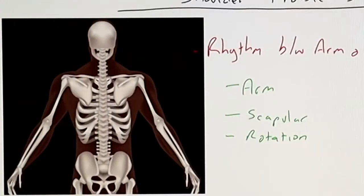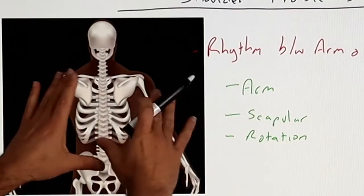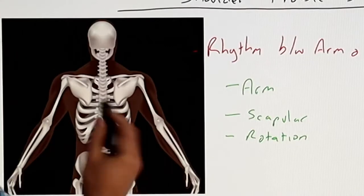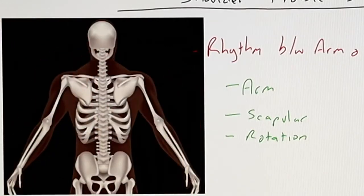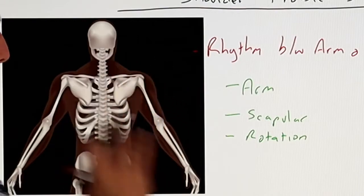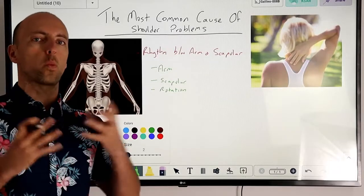If we have a look at our shoulder complex from behind, the shoulder is actually a complex series of joints, it's not just one joint.